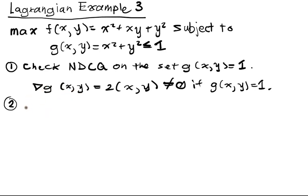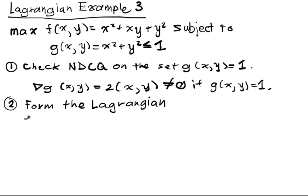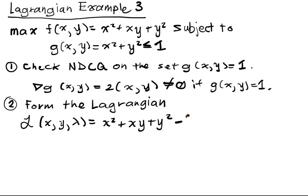So now we form the Lagrangian. We put our function x squared plus xy plus y squared minus lambda times the quantity x squared plus y squared minus 1.